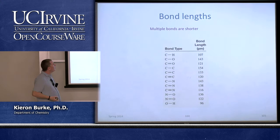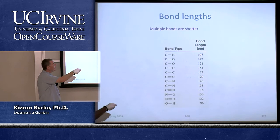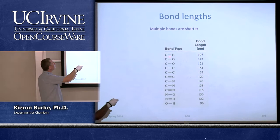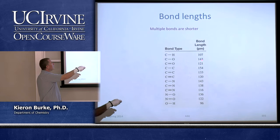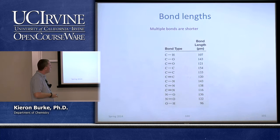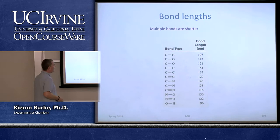Here are different bond types with their bond lengths. Single bonds tend to be longer and double bonds are shorter. A C-O single bond is 143 picometers and gets shorter with a double bond. Carbon-carbon single, double, and triple bonds get shorter each time. Also the energy of a triple bond is greater than a double bond, which is greater than a single bond.